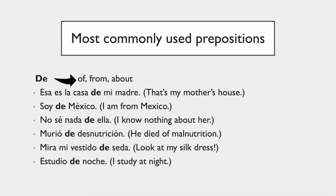Here's a list of the most commonly used prepositions. The first one is 'de', which means 'of', 'from', and 'about'. For each slide, I will not read the examples, so please pause the video, read the examples, and maybe make some notes.